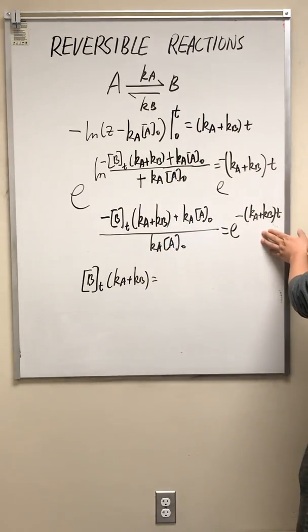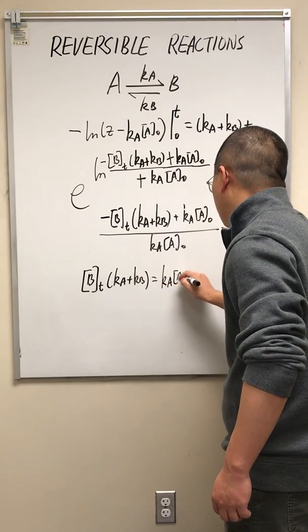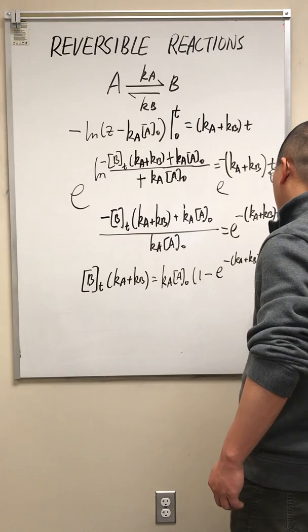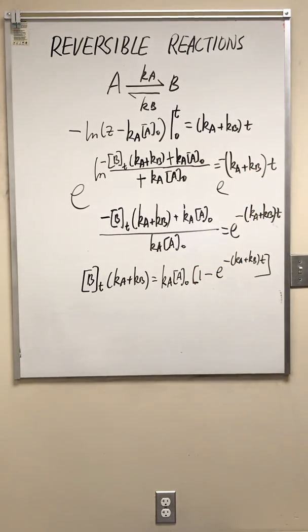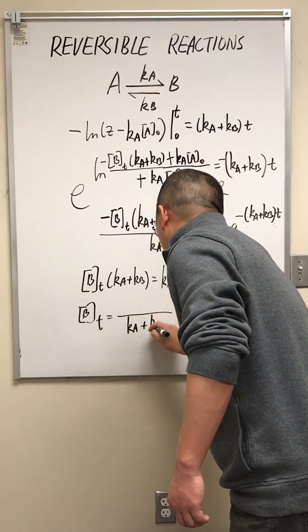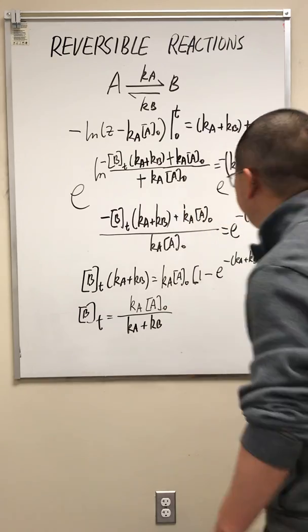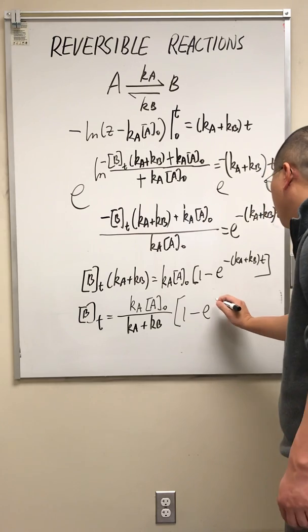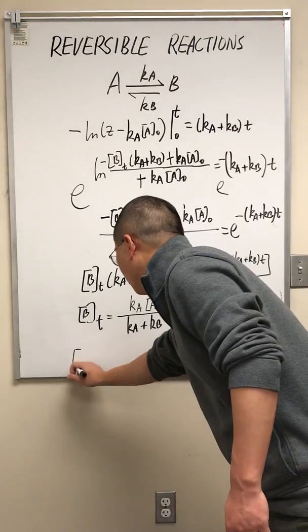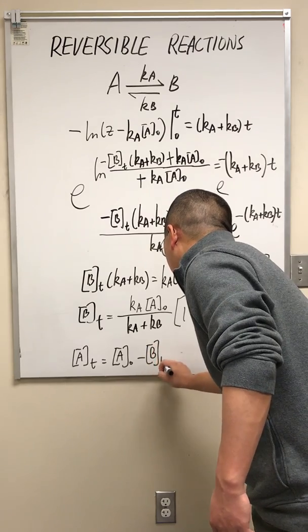After a little more algebra — multiplying through, moving terms to the right-hand side, and multiplying both sides by negative one — we have the concentration of B at any given time T equal to kA times A0 divided by kA plus kB, times the quantity 1 minus e to the power of negative (kA plus kB) times t. The concentration of A at any given time T is simply A0 minus the concentration of B at time T.